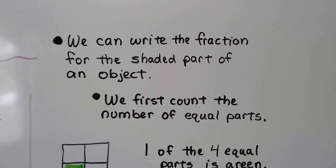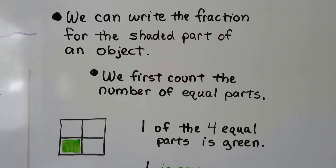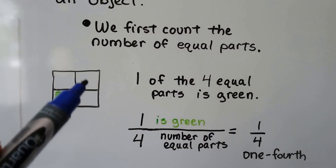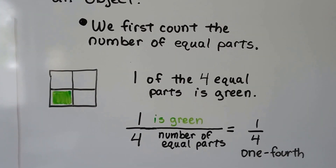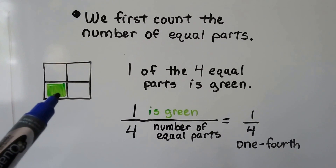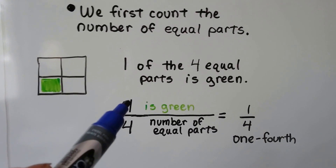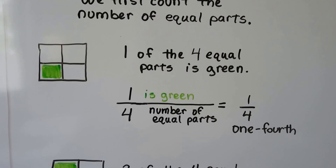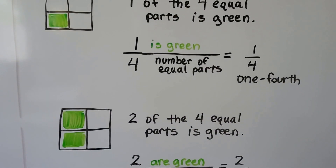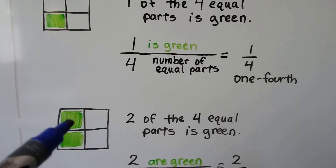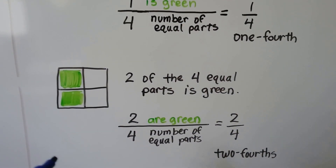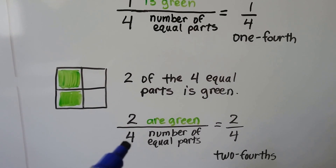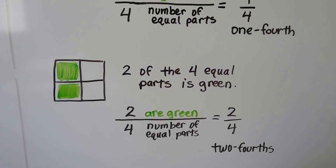We can write the fraction for the shaded part of an object. We first count the number of equal parts: one, two, three, four. One of the four parts is green, so one is green and four is the number of equal parts — one fourth is green. Now two of the four equal parts are green. Two are green, four is the number of equal parts, so two fourths are green.